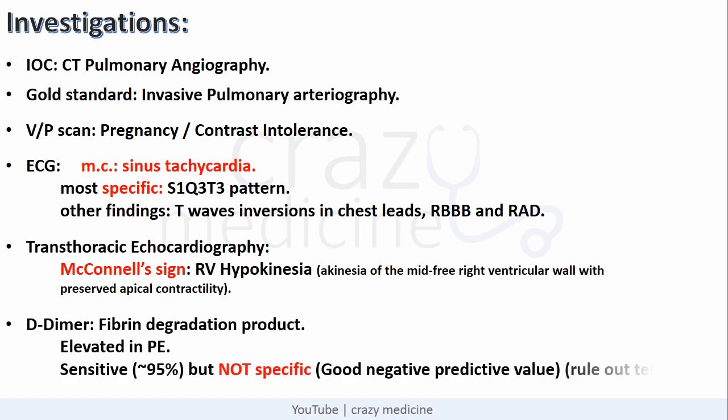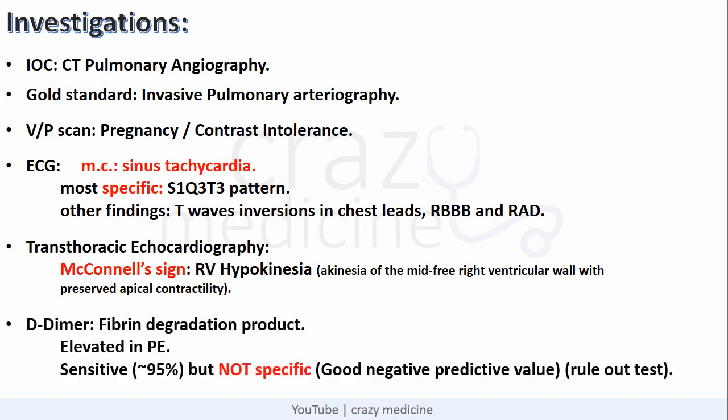The next investigation is D-dimer. It is a fibrin degradation product which is elevated in pulmonary embolism. This test is sensitive — around 95% sensitivity — but not specific. It has a good negative predictive value, so it can be used as a rule-out test, not a diagnostic test.